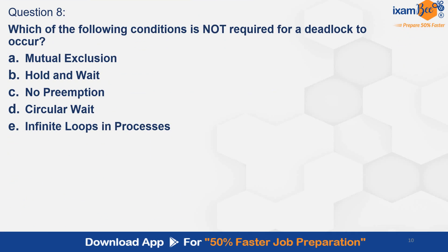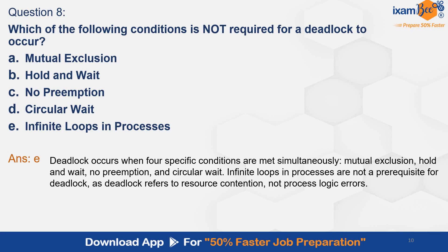Question 8. Which of the following conditions is not required for a deadlock to occur? Option A. Mutual exclusion. B. Hold and wait. C. No preemption. D. Circular wait. E. Infinite loops in processes. And the correct answer is E — infinite loops in processes. Deadlock occurs when four specific conditions are met simultaneously: mutual exclusion, hold and wait, no preemption, and circular wait. Infinite loops in processes are not a prerequisite for deadlock, as deadlock refers to a resource condition, not process logic errors.